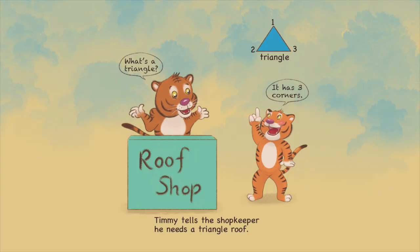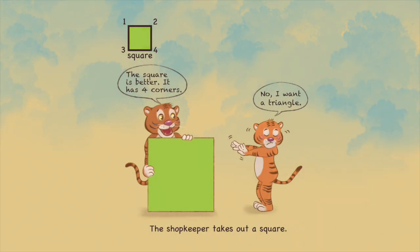It has three corners, Timmy answers. The shopkeeper takes out a square. The square is better. It has four corners.